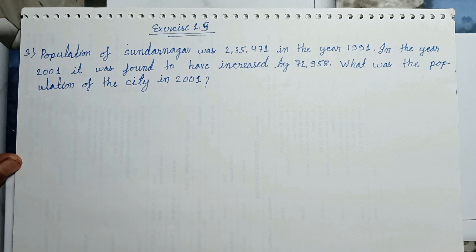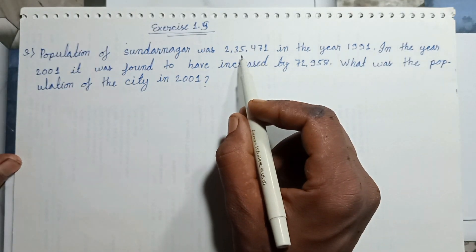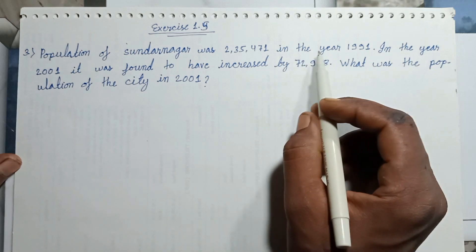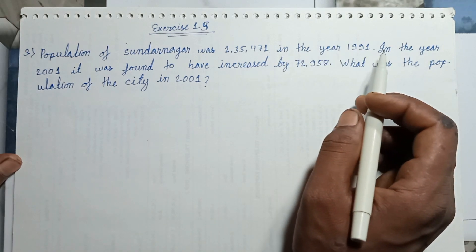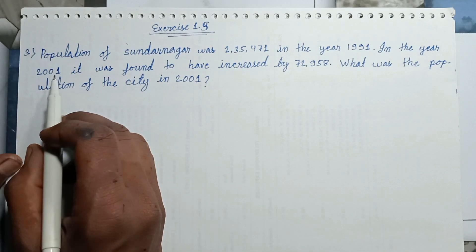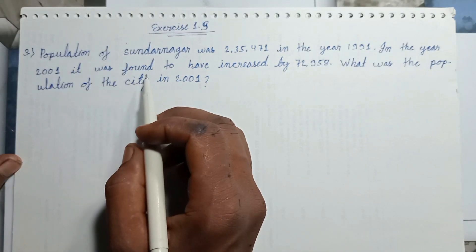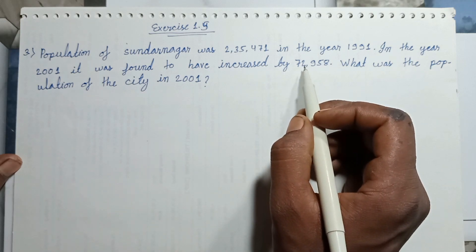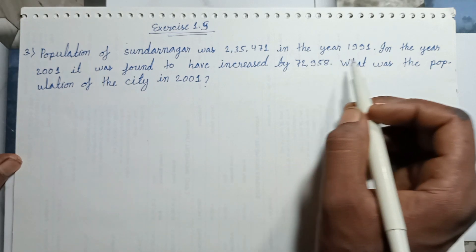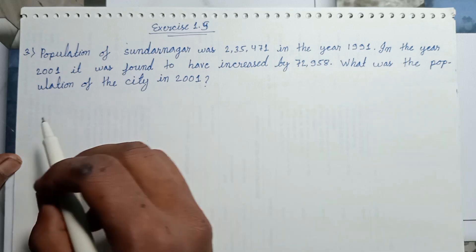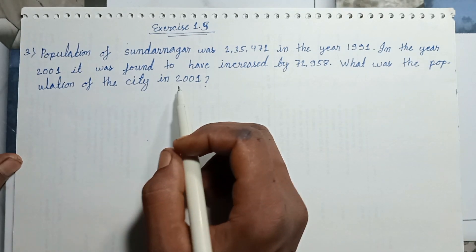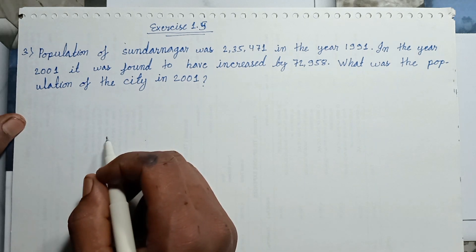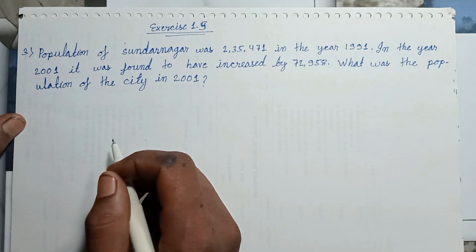The population of Sundar Nagar was 235,471 in the year 1991. In the year 2001, it was found to have increased by 72,958. What was the population of the city in 2001? This question belongs to R.D. Sharma Mathematics for Class 6.